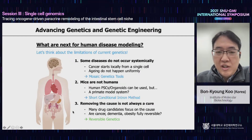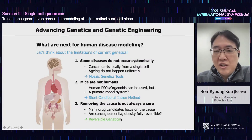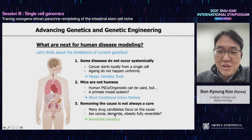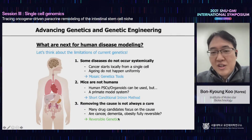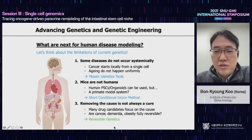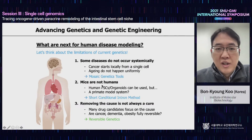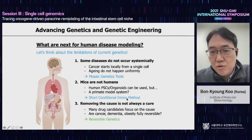The third point is the prevailing assumption that removing the cause is always a cure — but it is not. A lot of big pharma focuses on disease cause in order to cure disease, but imagine you already have dementia and have lost your neurons. Even if you remove the cause, the lost neurons won't come back. To understand this reversibility in biology we need to think about performing reversible genetics. So today I'm going to show you two answers: one is a mosaic genetics tool, and the other is the short conditional intronic method.